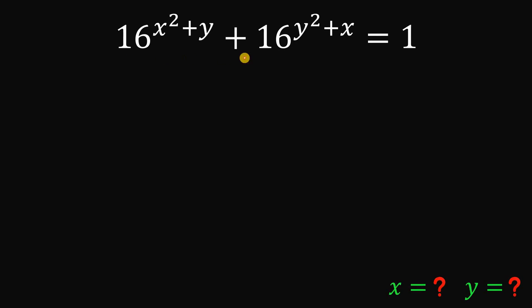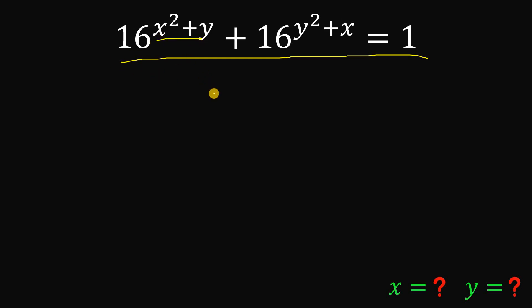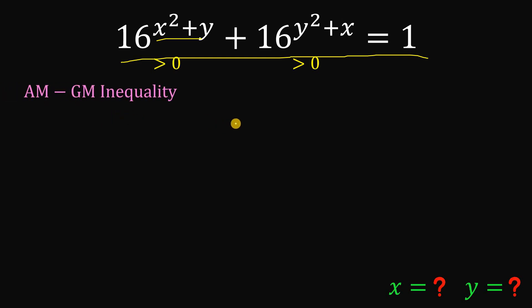Alright, so given this equation, the goal is to find the value of x and y that satisfies it. To answer this, the first thing is to analyze the given question. Because 16 raised to some power — whether this exponent is positive or negative — this number is always greater than 0. The same is true for 16 raised to the power of y squared plus x. This is also greater than 0. When this scenario happens, one inequality comes to mind: the AM-GM inequality.